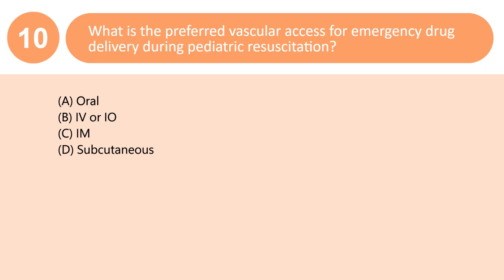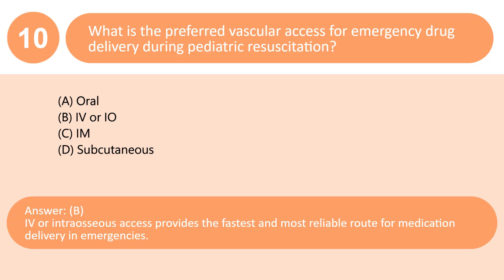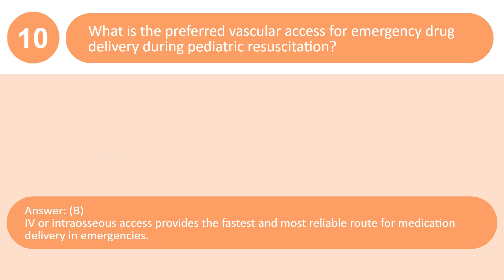What is the preferred vascular access for emergency drug delivery during pediatric resuscitation? A. Oral. B. IV or IO. C. IM. D. Subcutaneous. Answer: B. IV or intraosseous access provides the fastest and most reliable route for medication delivery in emergencies.